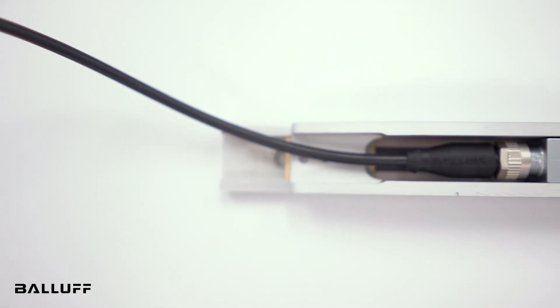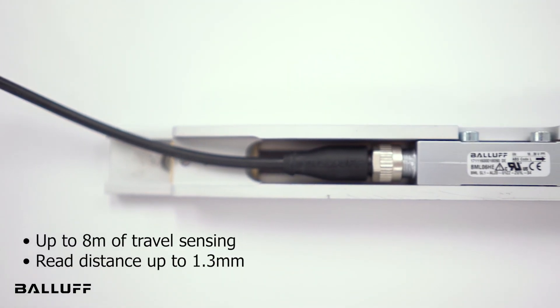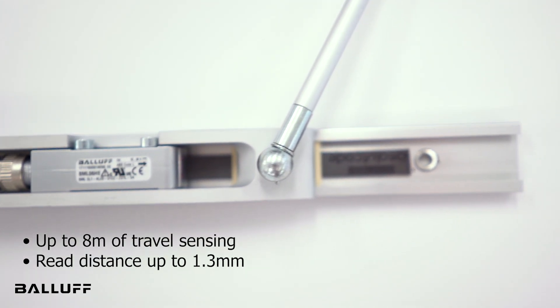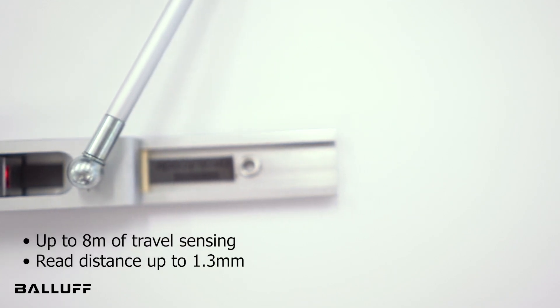Developed for measuring and positioning applications, our magnetic encoders provide absolute measurement by traveling above a magnetically coated strip that can be up to 8 meters long.